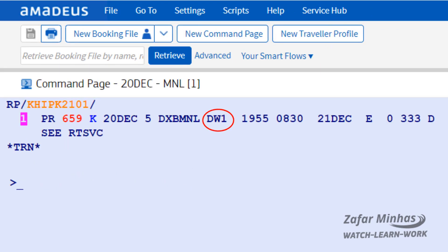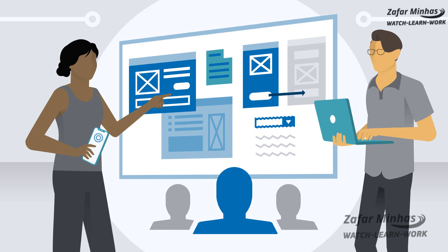Here the status code is DW, which means the confirmation of the booking is waitlisted. And that's it — you have just learned how to sell an air segment.